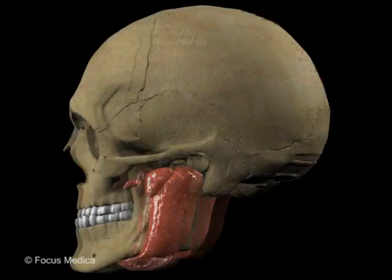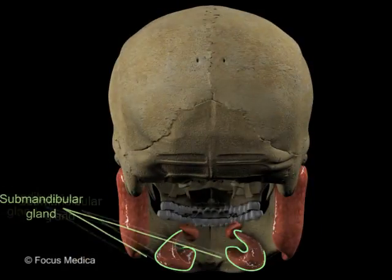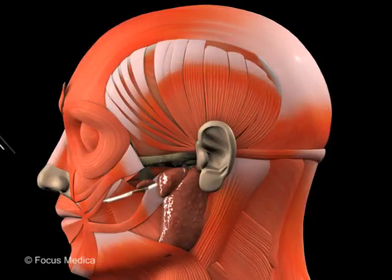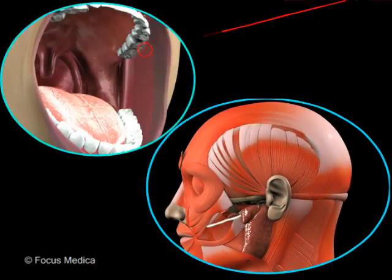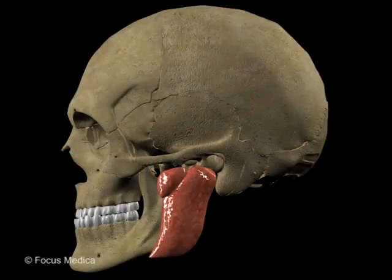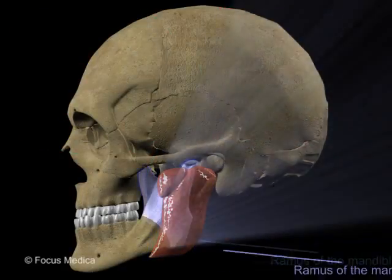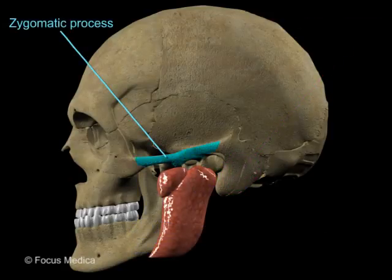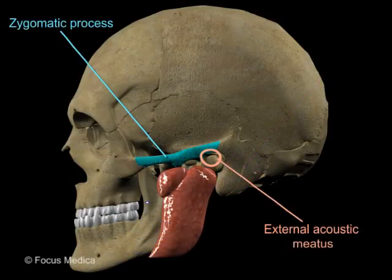The parotid gland is the largest of the salivary glands. It pours its secretions through the parotid duct into the vestibule of the mouth. The parotid gland is wedged in the space bounded by the ramus of the mandible anteriorly and the mastoid process posteriorly. The zygomatic process and the external acoustic meatus limit it superiorly.